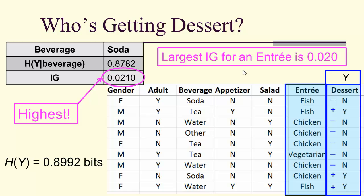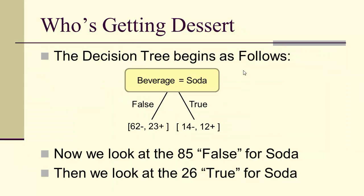Therefore, soda equals true — or the other three equals true — is the condition that gives the highest information gain. The decision tree starts with beverage equals soda. For true we have 14 minus and 12 plus; for false, 62 minus and 23 plus. We then repeat this process for the 85 false-for-soda and 26 true-for-soda subsets.